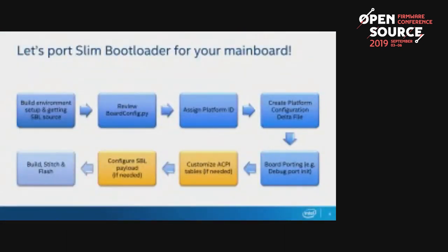Let's get started porting Slim Bootloader for your mainboard. Here are the main steps summarized from a high-level perspective — you can go deeper later. The color-coded flow shows optional steps in orange/yellow, in case you need to perform more initialization, which my colleague Jinzhu will explain in detail. First things first: you need to set up the system environment. We support building on both Windows and Linux. On Windows, install Visual Studio 2015 or other versions requiring the x86 C++ compiler tools. On Linux, we tested with Ubuntu 18.04 LTS using GCC.